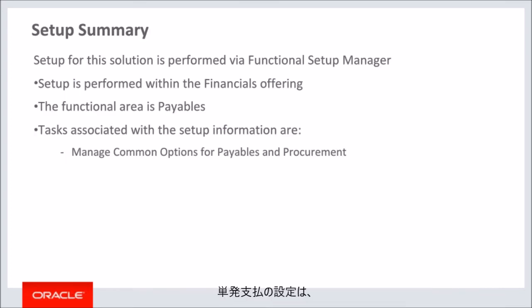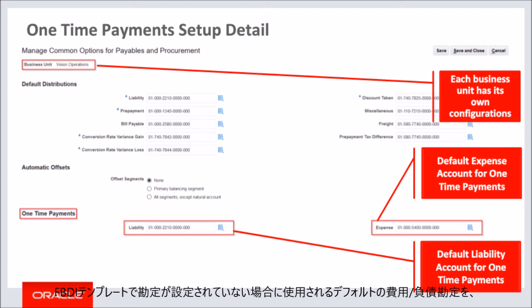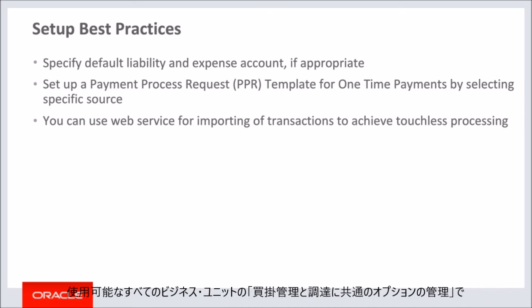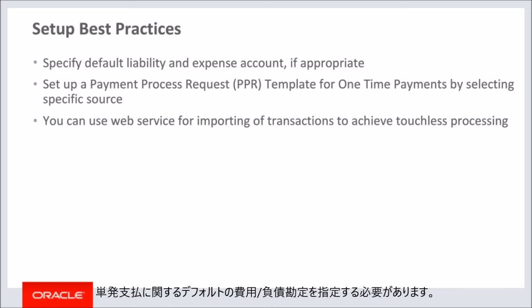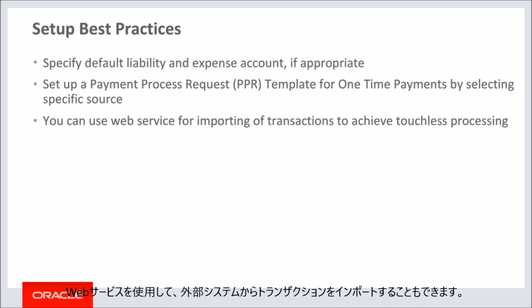The setup for one-time payments is achieved by providing default liability and expense accounts for one-time payments in manage common options for payables and procurement. For each business unit that processes one-time payments, specify the default liability and expense accounts that will be used if the accounts are not provided in the FBDI template. You should specify a default liability and expense account for one-time payments in manage common options for payables and procurement for all the business units for which it is available. Additionally, setting up a PPR template specifically for one-time payments will help in quick processing of these transactions. You can also use web service to import the transactions from an external system.